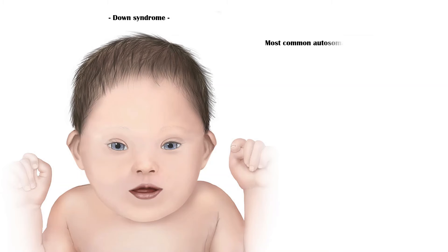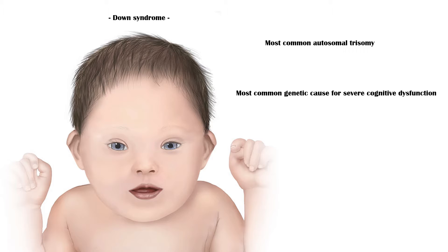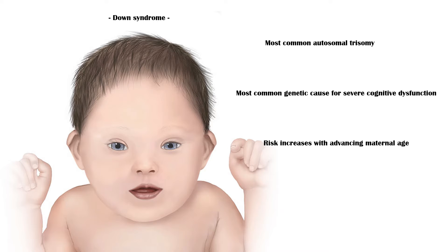Down syndrome is the most common autosomal trisomy, and it is the most common genetic cause for severe cognitive dysfunction. The risk of getting Down syndrome increases with advanced maternal age. In this video, our primary goal is to discover the features and long-term complications of Down syndrome.